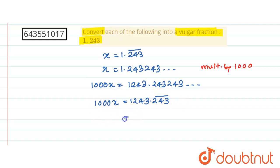Now we can just split this 1242 plus 1.243 bar, because we have to replace the value of x here. So 1000x, therefore this is 1000x. This is equal to 1242 plus x, because x is equal to 1.243 bar.